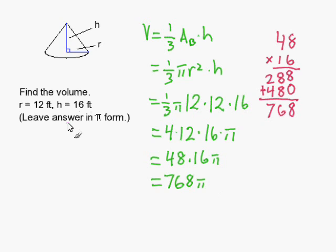Now I'm going to leave the pi here because I'm asked to do that. If you are asked to use 3.14 for pi or multiply it out, then you would just take this answer here and you would multiply it by 3.14.